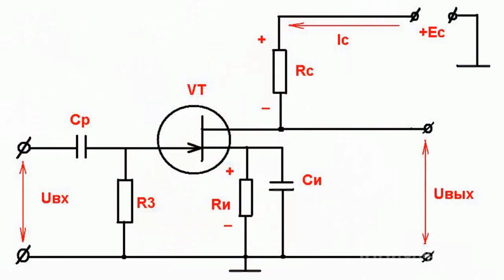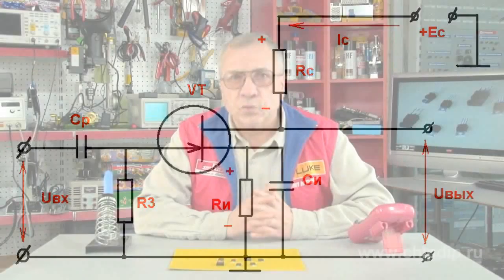A field effect transistor may be connected to an amplifier circuit in three different ways: with a common source, with a common drain, and with a common gate. In practice, the schematic using a common source is most popular. An amplifier stage with a common source provides great current and power amplification.